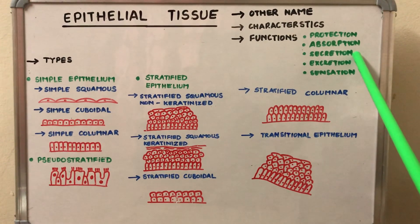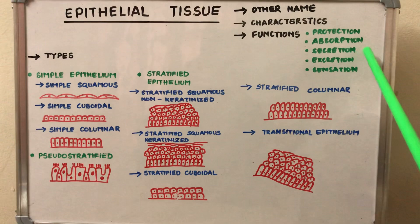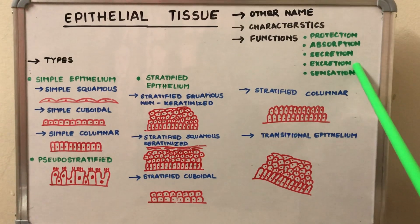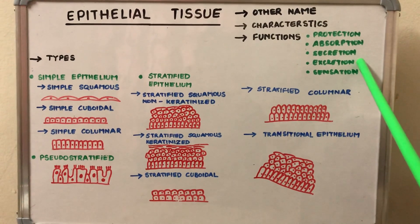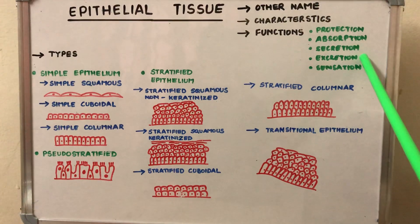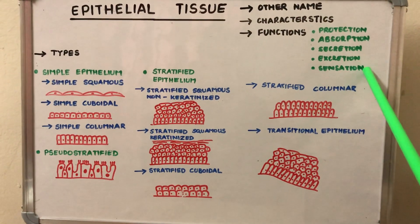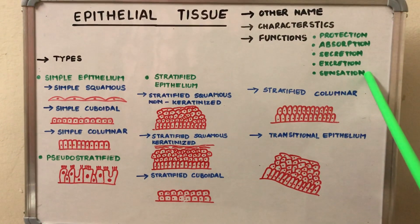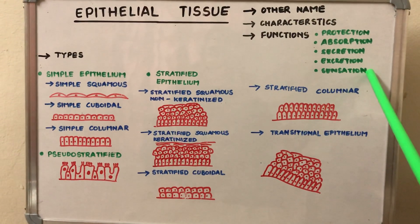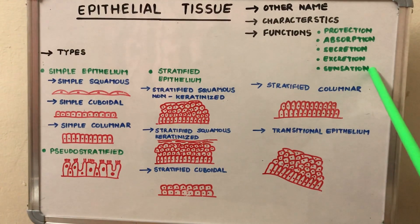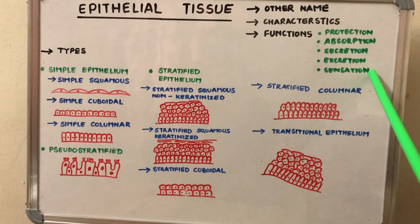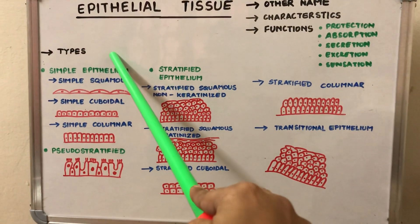Fourth, for excretion, the epithelium lining the distal convoluted tubules of the kidney and the collecting ducts of the kidney makes it excretory in nature. Lastly, for sensation, the epithelial tissue is modified in the form of rods and cones of the retina of the human eye, making it sensory in nature.